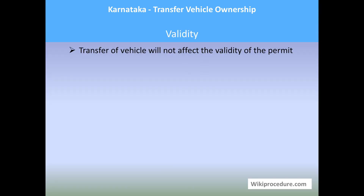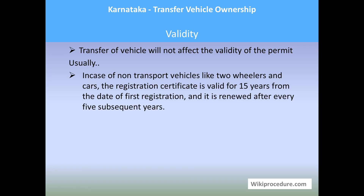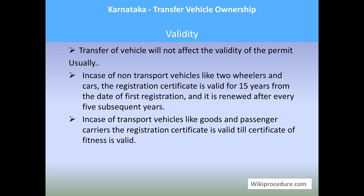Regarding validity: the transfer of vehicle will not affect the validity of the permit for which the vehicle is granted, nor the registration RC validity. Usually, in case of non-transport vehicles like two-wheelers and cars, the registration certificate is valid for 15 years from the date of first registration and is renewed after every five subsequent years. In case of transport vehicles like buses and carriers, the registration certificate is valid as long as the fitness certificate is valid.